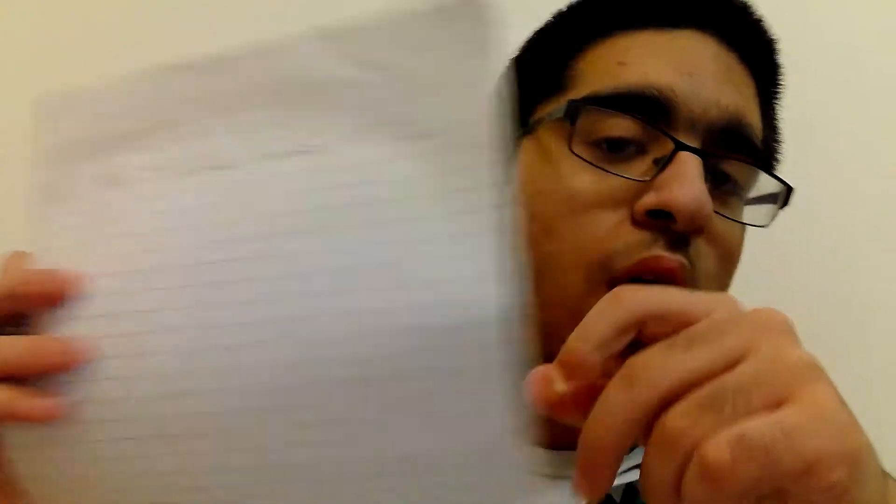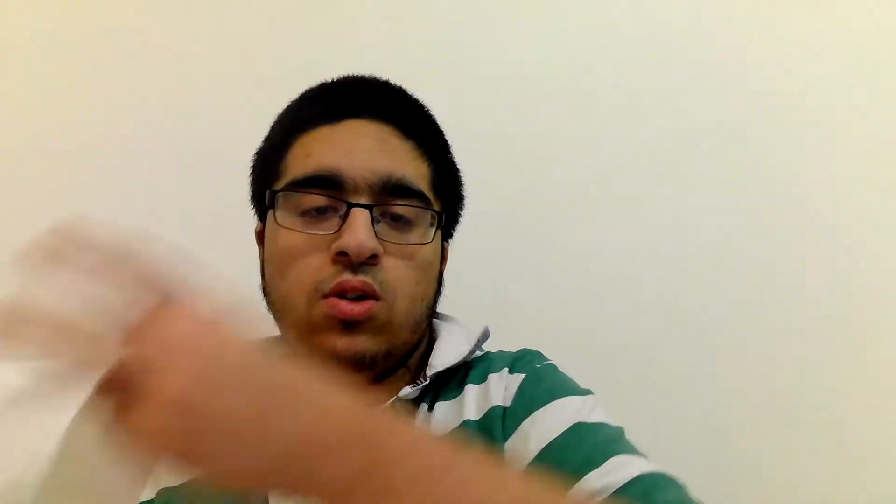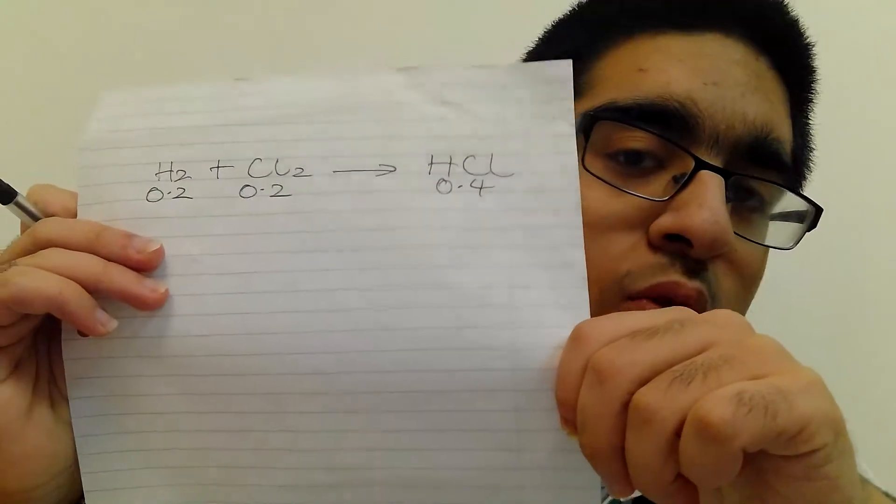So the first step: write down what the species are — H2 plus Cl2 producing HCl. Below each species, write the number of moles. For H2 it was 0.2, for Cl2 it was 0.2, and for HCl it was 0.4. I'd recommend writing the units — it could be 0.2 grams or something else, so it's clearer for the examiner. Then 0.2 is the smallest number, so we divide each value by 0.2. That gives us 1 for hydrogen, 1 for chlorine, and 0.4 divided by 0.2 is 2. So it's a 1 to 1 to 2 ratio.